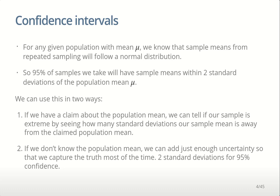If the sample mean is far away from the claimed population mean, then our sample was very extreme compared to what we'd expect if the claim was true — so our sample would be providing evidence against that claim. The other way we can use it is that if we don't know the population mean, we can add just enough uncertainty so that we capture the truth most of the time. If we add plus or minus two standard deviations, then 95% of the time we will capture the truth.